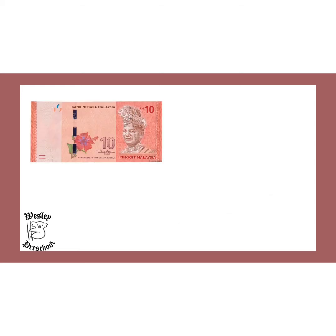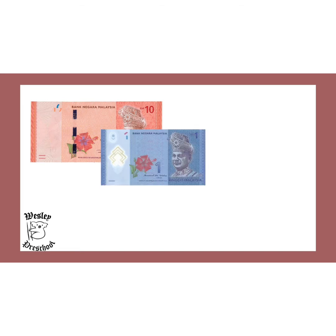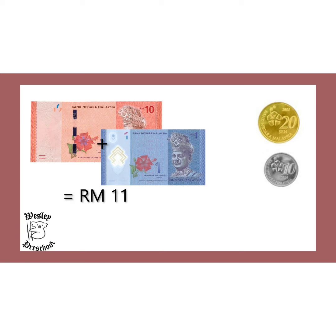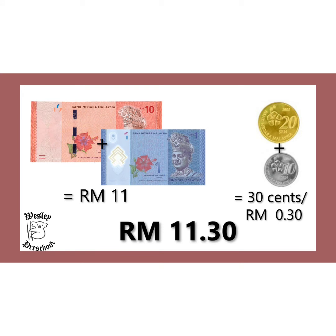Let's try again. This is 10 ringgit. This is 1 ringgit. This is 20 cents. This is 10 cents. So, how much is the total of this money? Let's count: 10 ringgit plus 1 ringgit equals 11 ringgit. 20 cents plus 10 cents equals 30 cents. So, the total of this money is 11 ringgit and 30 cents.